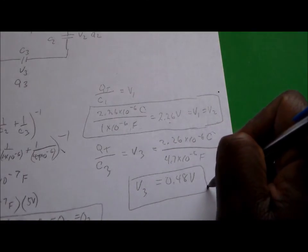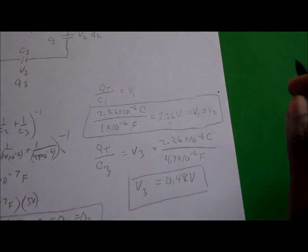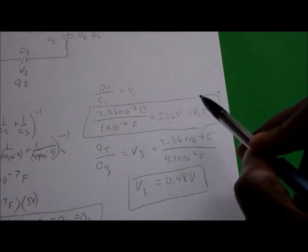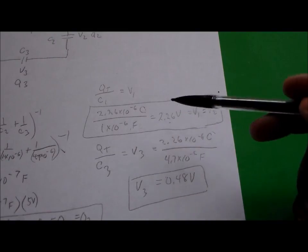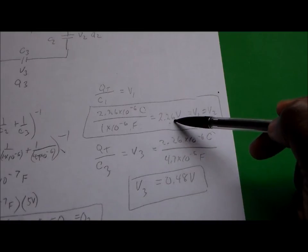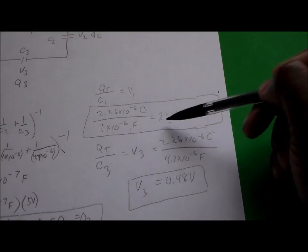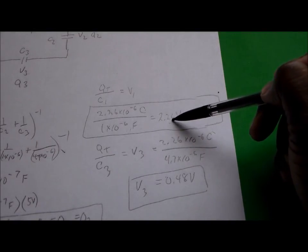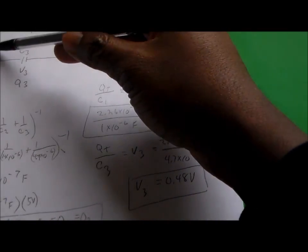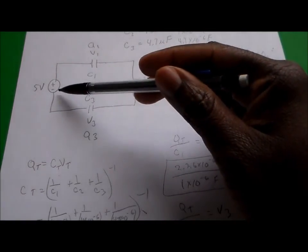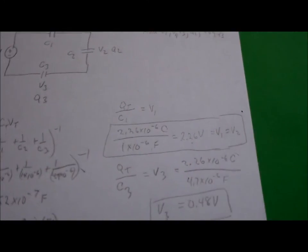Those are our three voltage values across all three capacitors. If we add all three together — two times 2.26, which gives approximately 4.5, plus 0.48 — that brings us to about 5 volts, which matches the initial voltage in this problem. So that confirms our answer.